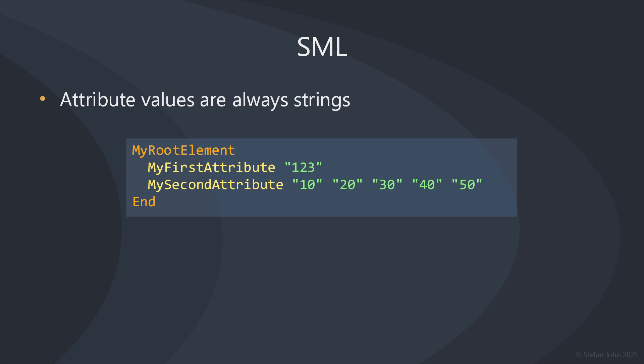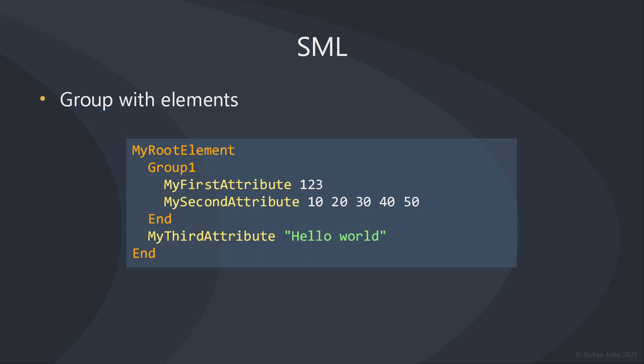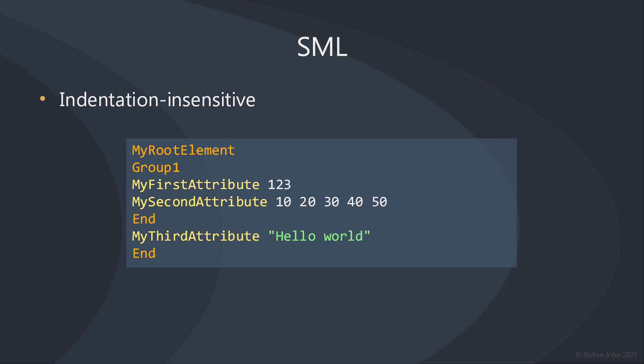To visualize that, let's enclose all values in double quotes. In this case they are not necessary because the values do not contain any special characters. But as soon as a value contains special characters such as whitespace or the double quote character itself, they become necessary. Here we added a third attribute which holds the single string "hello world". The space between the words makes the double quotes necessary. Now we want to group some of the attributes by adding an element to the root element, which we call group1. Although the example shows that the lines are indented, note that SML is indentation-insensitive. You can use as many tabs or spaces as you want, or no indentation at all, but for better readability it is recommended to use indentation.